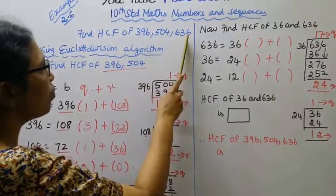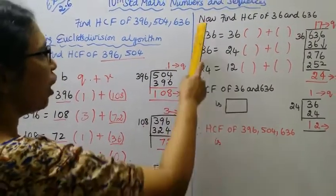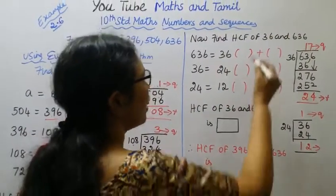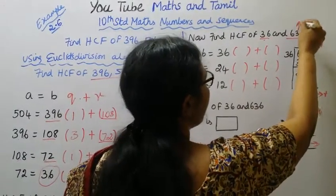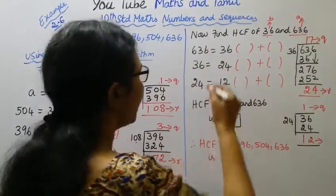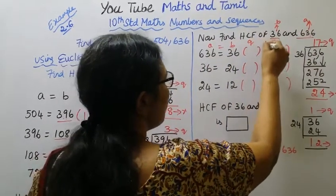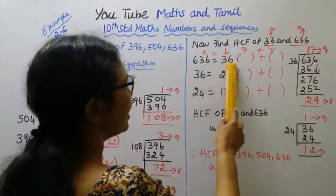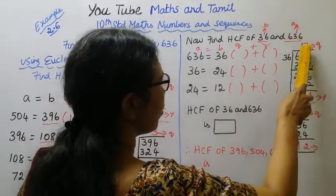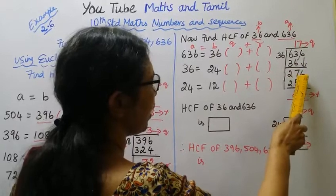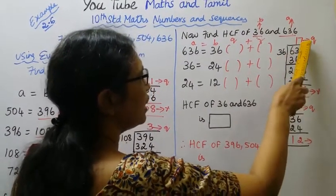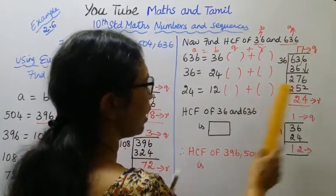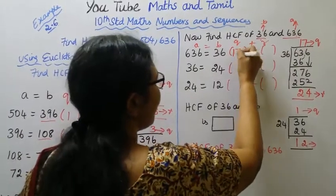Now find HCF of 36 and 636. Divide 636 by 36. 1 into 36 is 36. 636 minus 36... 7 into 36 is 252. 276 minus 252 is 24. So quotient is 17 and remainder is 24.